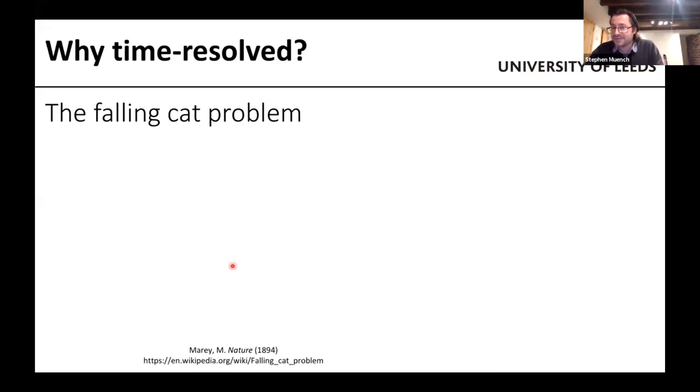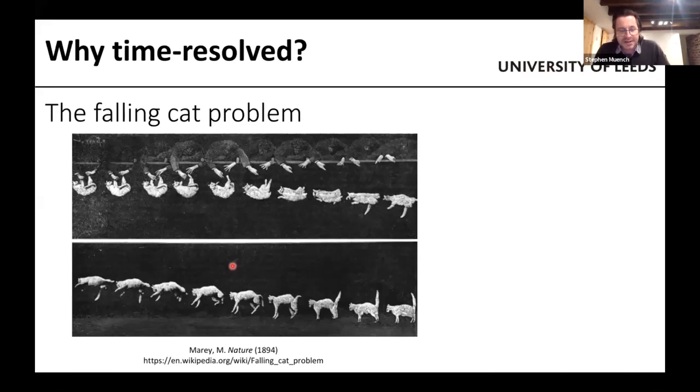I guess ethics was a little bit different in those days. And so this is how you get yourself a Nature paper. But in 1894, this group solved the problem by doing a time-resolved study. That is to say that they had a cat that they held upside down, they dropped it, and then it landed on its feet. So they knew the start point and the end point of the reaction, if you like.